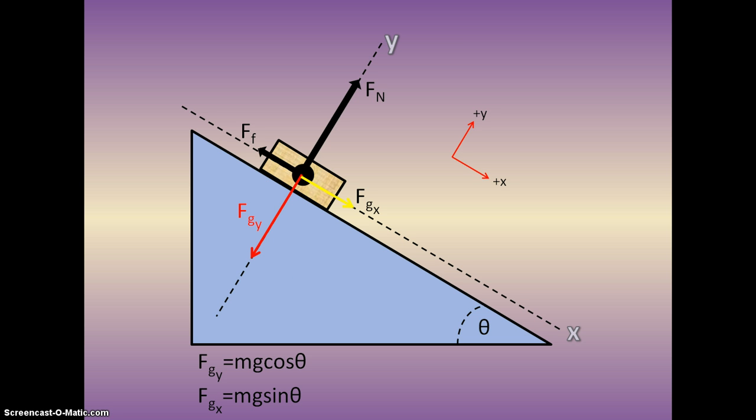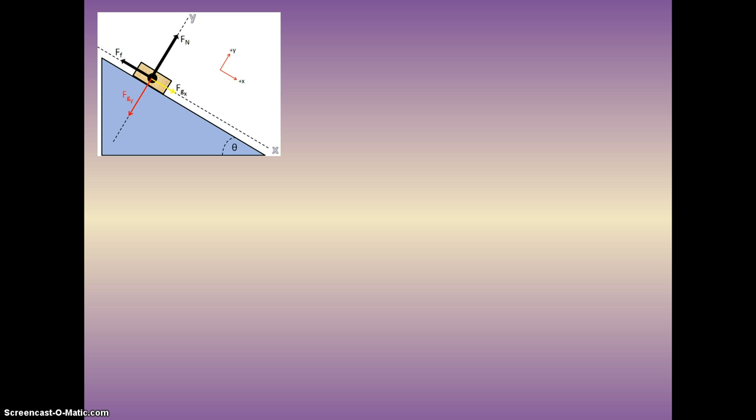So at this point you should have a free body diagram that basically looks like this. A normal, the force of gravity in the y, the force of gravity in the x, and the force of friction. And remember FGY is MG cosine and FGX is MG sine of theta. So there's a little picture of our FBD and at this point you should not be thinking what do I do next. It's always the same thing.